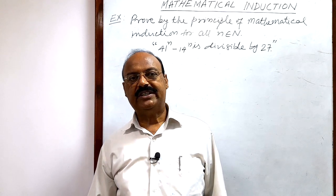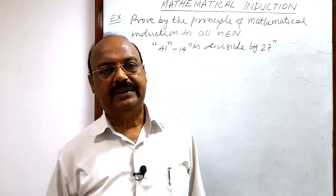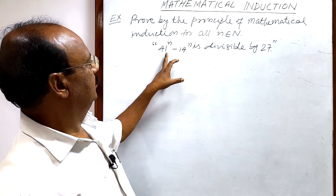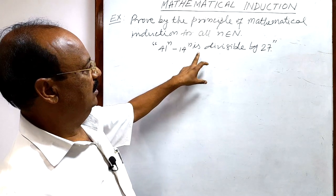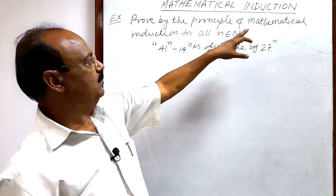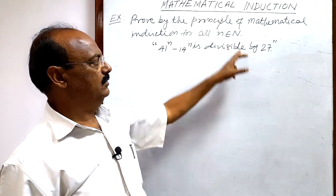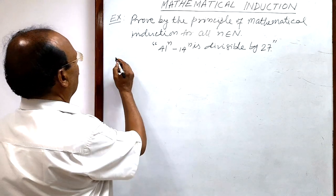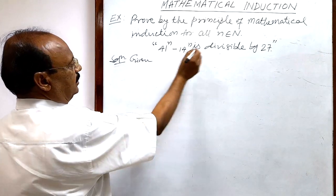Here, let us see a very important problem from the chapter Mathematical Induction. We will solve this question by the principle of mathematical induction. The question is: we have to prove that 41 to the power n minus 14 to the power n is divisible by 27, for all n belonging to the set of natural numbers.